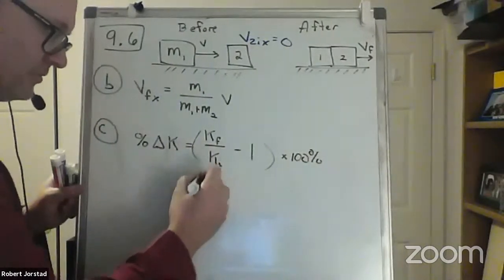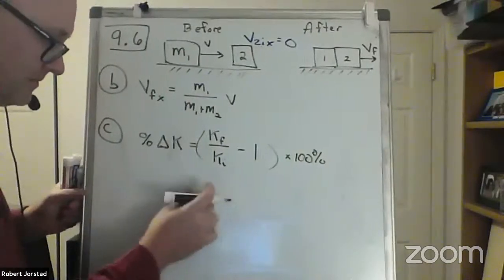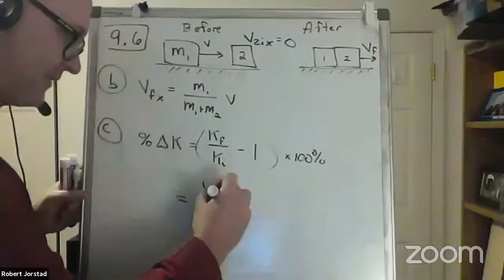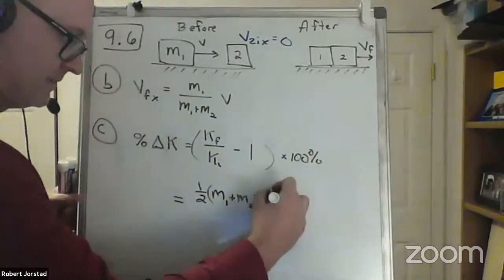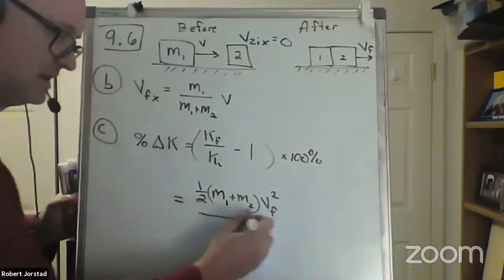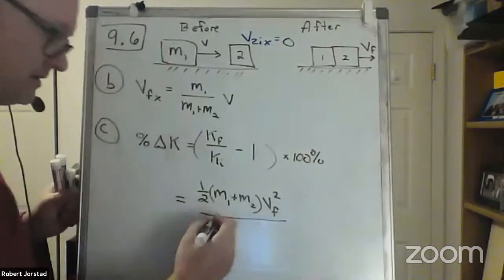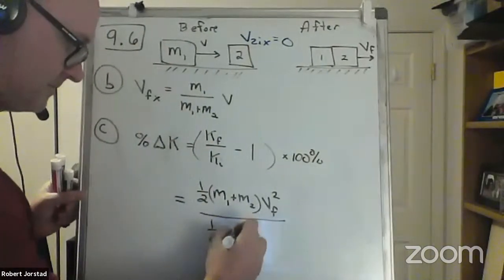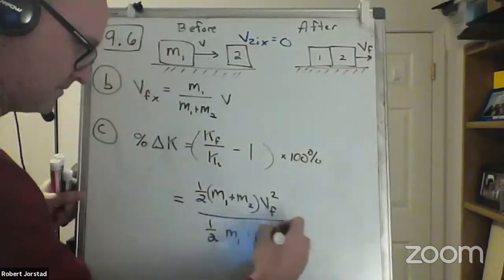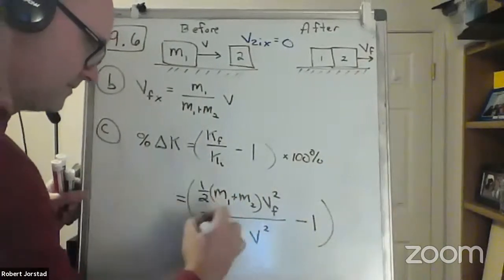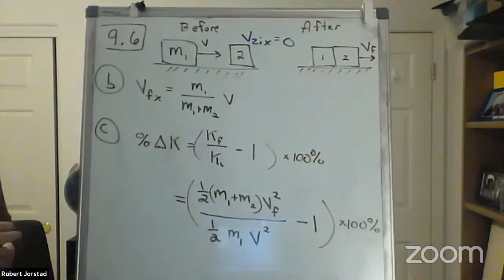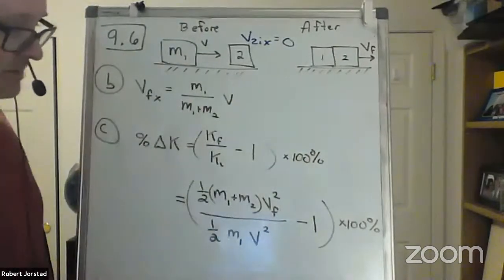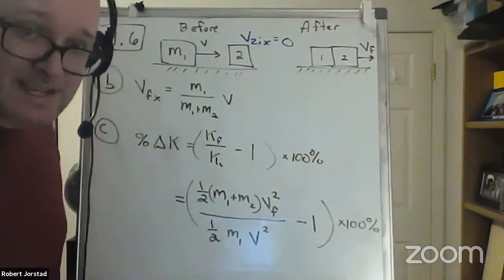I'm going to rewrite this as K final over K initial minus one times 100%. The final kinetic energy — what's the equation for kinetic energy? One half M V squared. In this case it's one half times (mass one plus mass two) times V final squared. That's the final kinetic energy. The initial was one half M1 V squared. Does anything simplify? The one halves in the numerator and denominator cancel.